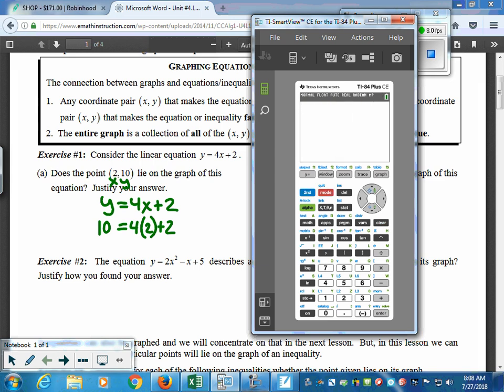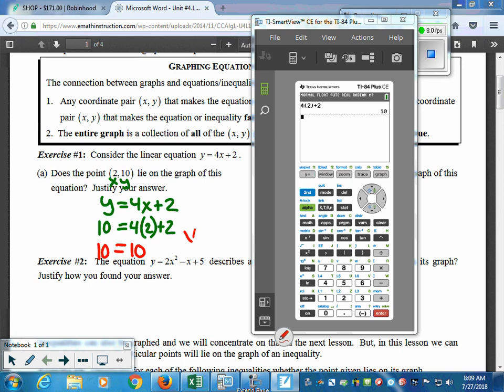So, I type in the expression on the right-hand side, 4(2) plus 2, and I get 10. So, in this case, 10 is 10, which in this case means that the answer is yes. So, I have yes, and I have my justification.